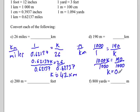So that means that the number of kilometers is 0.190. So 190 meters is 0.19 kilometers.